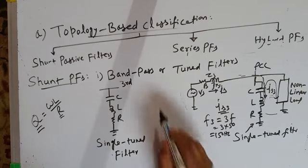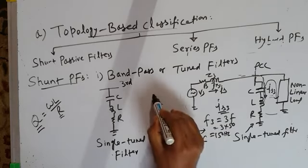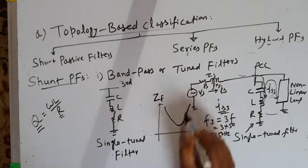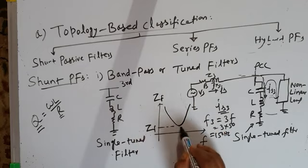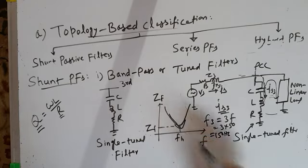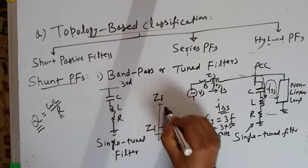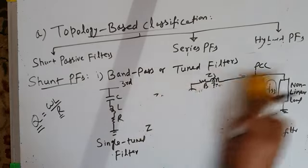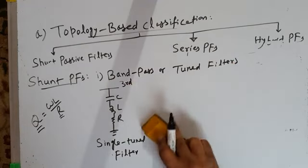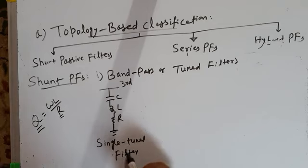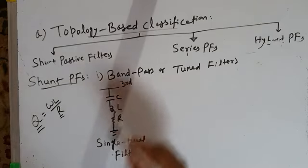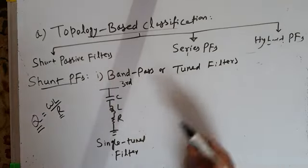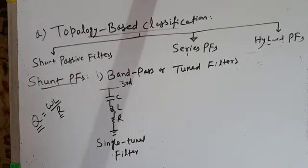So the source current is free of third harmonic current. In terms of impedance vs frequency, the filter presents very low impedance at the particular harmonic frequency it is tuned to. This is how a single-tuned filter traps a particular harmonic component of current. It is called 'single-tuned' because it is tuned to a single harmonic frequency — say third, fifth, or seventh, depending on which harmonic you want to suppress.